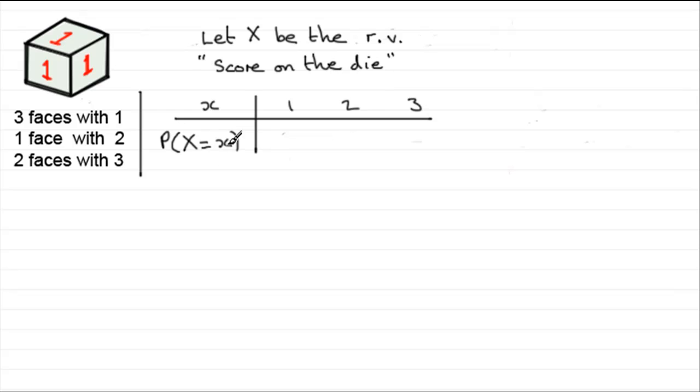And we've got the probability here that our score on the die equals any of these observed values x. So what's the probability, the chances of scoring a 1? Well, we've got three faces out of 6 that have a 1 on it, so that probability is going to be 3 out of 6.